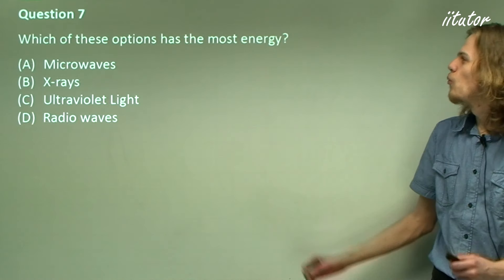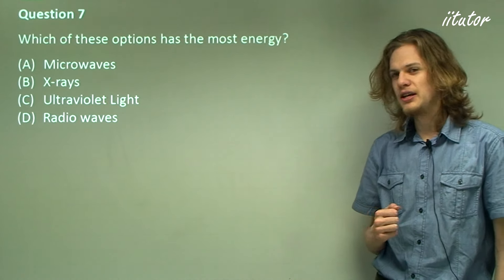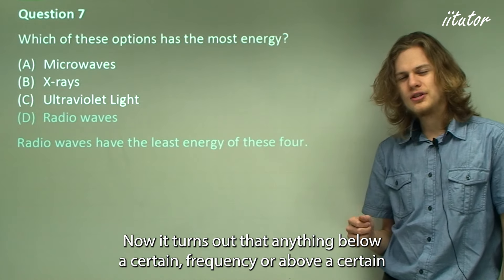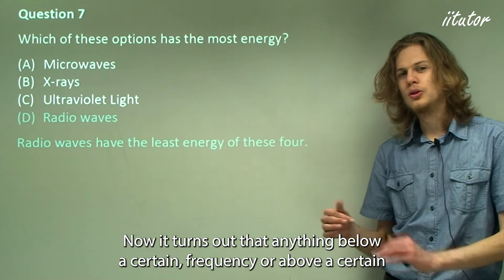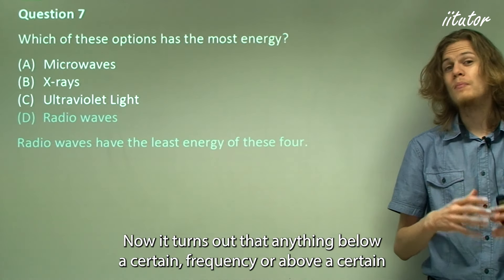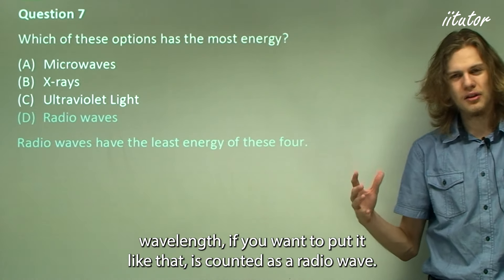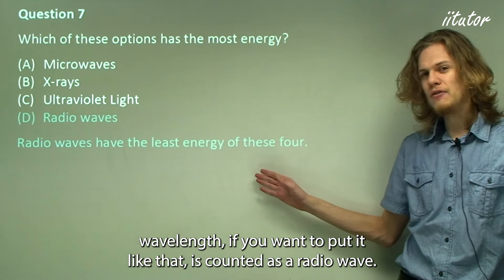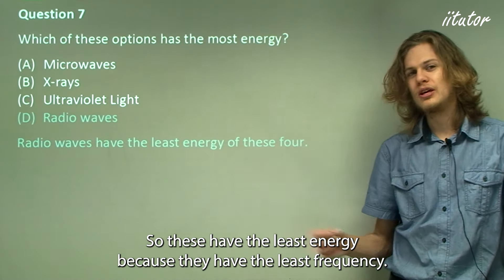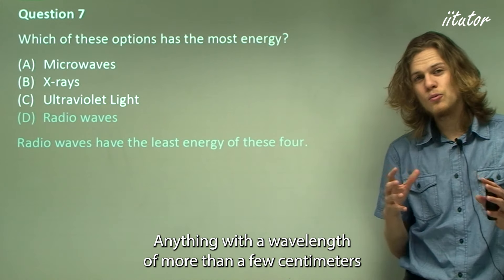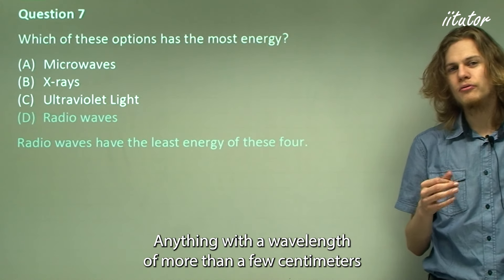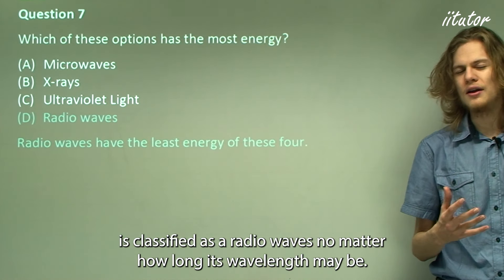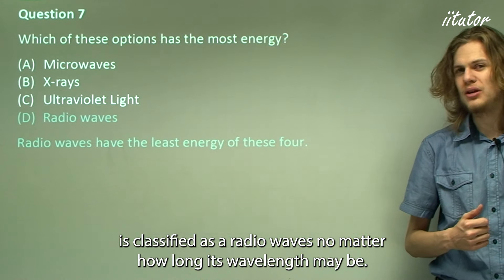Question 7: Which of these options has the most energy? Starting at the bottom — radio waves. Anything below a certain frequency, or above a certain wavelength, is counted as a radio wave. These have the least energy because they have the lowest frequency. Anything with a wavelength of more than a few centimeters is classified as a radio wave, no matter how long its wavelength may be.